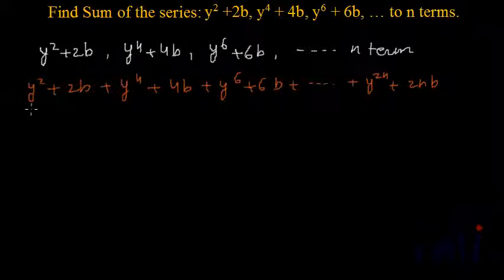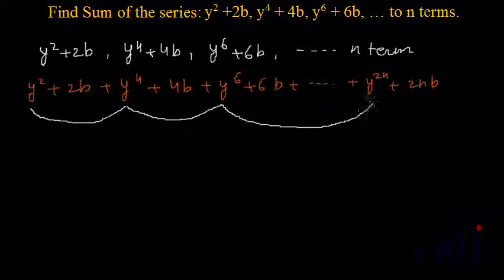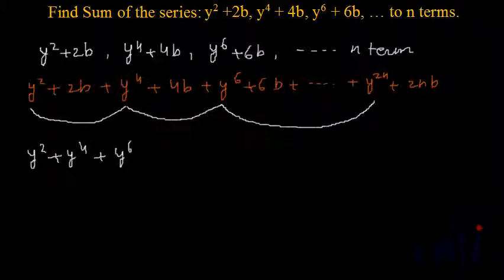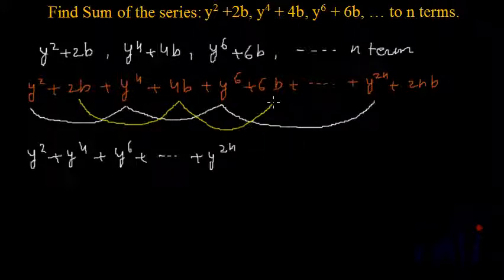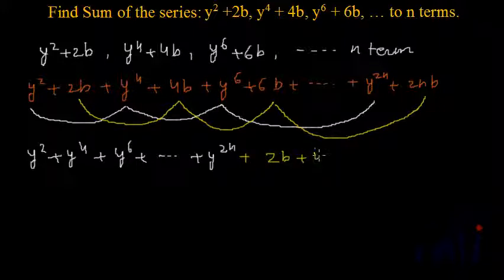If we see the terms alternately, one part forms a geometrical progression: y squared plus y to the power 4 plus y to the power 6, continuing till y to the power 2n. The other terms form an arithmetic progression where the first term is 2b, the second term is 4b, then 6b, continuing till 2nb.